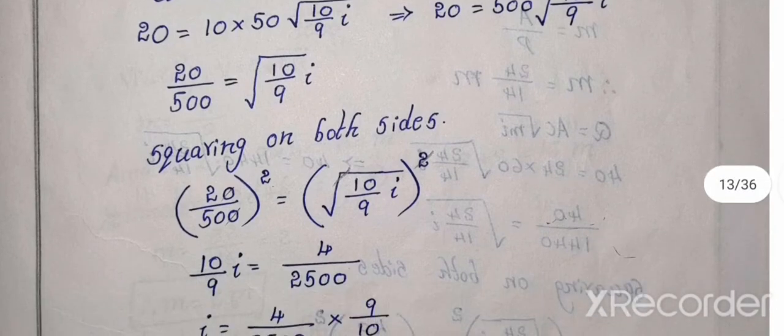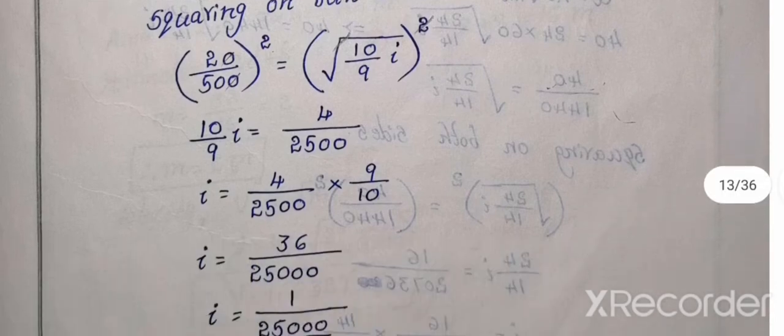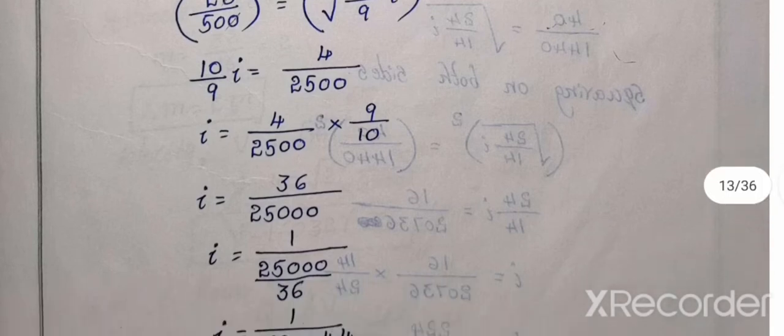So 500 equal to, order this, 20 by 500 equal to root 10 by 9 i. Squaring on both sides, so 20 by 500 whole square equal to root 10 by 9 i square. So square root cancel. 20 by 500, 2 by 50. So 2 by 50, 2 square 4, 50 square 2500, 10 by 9 i. I equal to 4 by 2500 into 10 by 9, reverse 9 by 10.